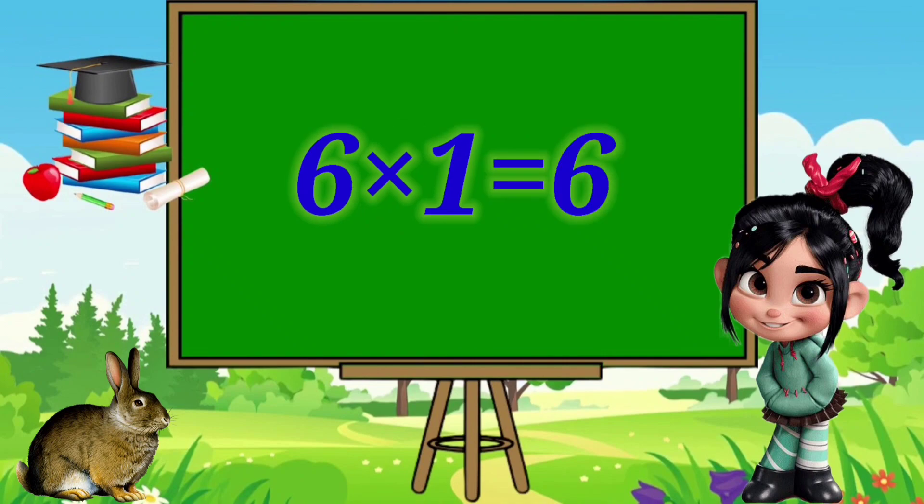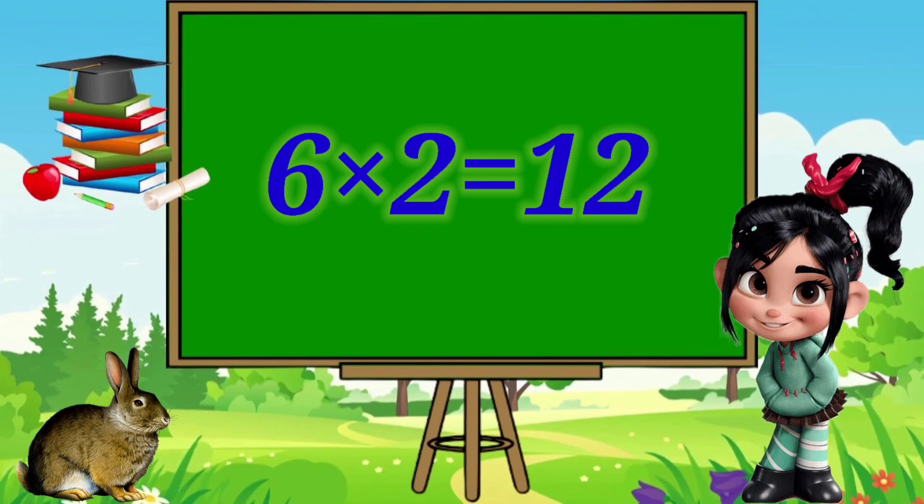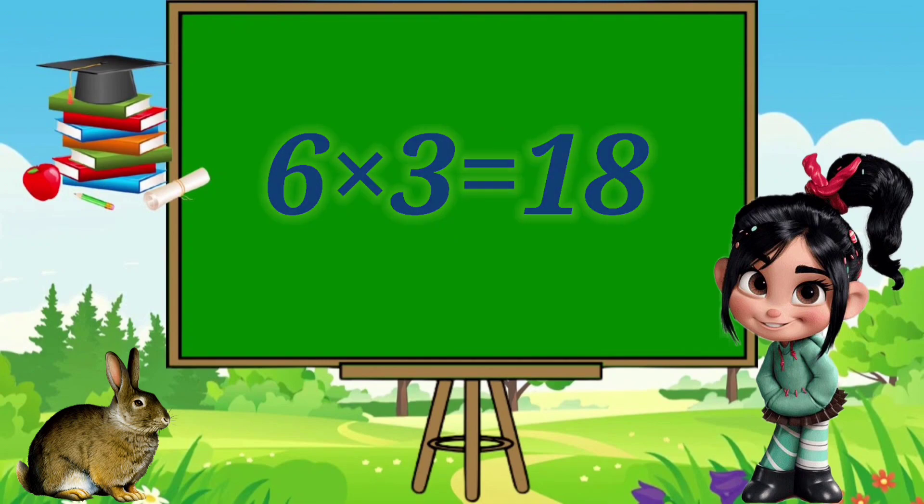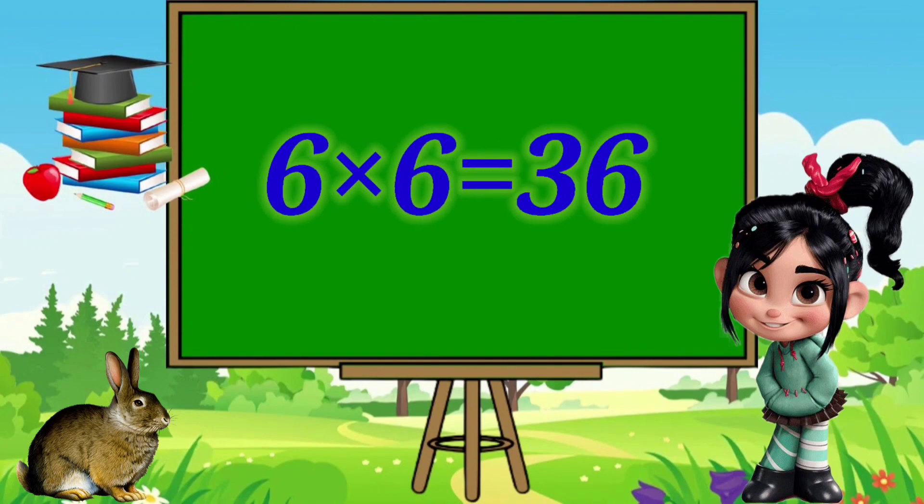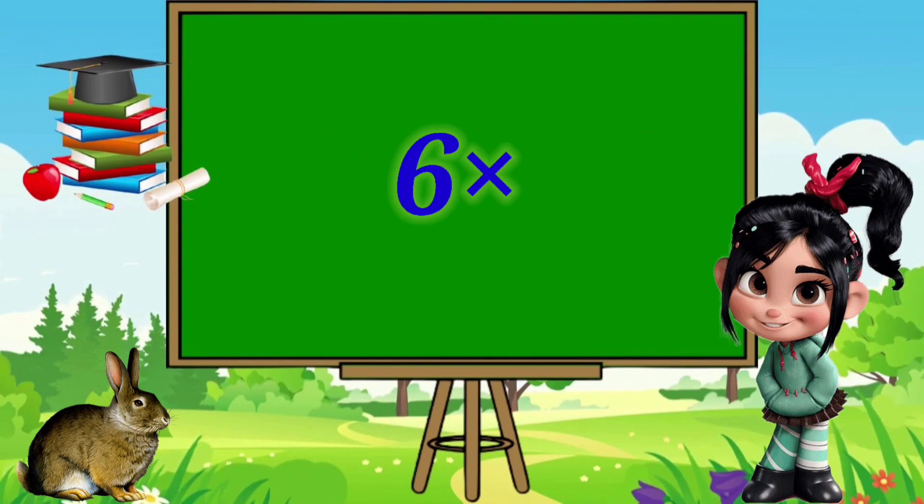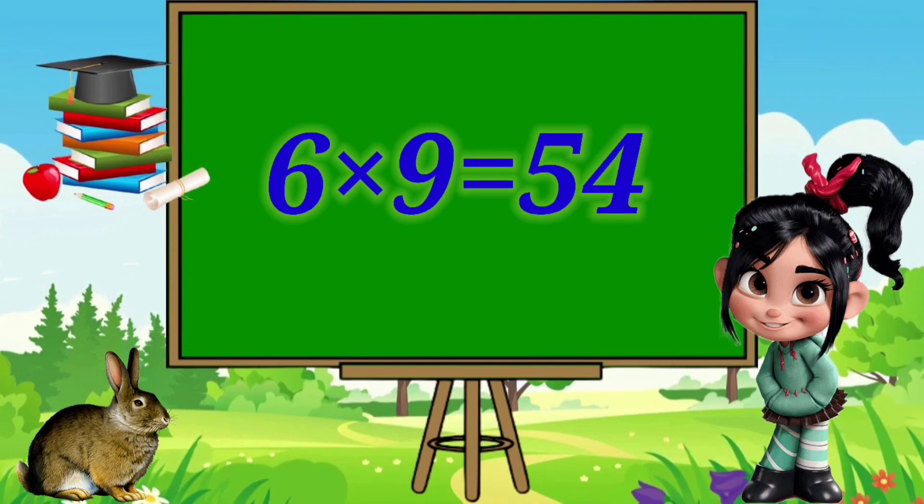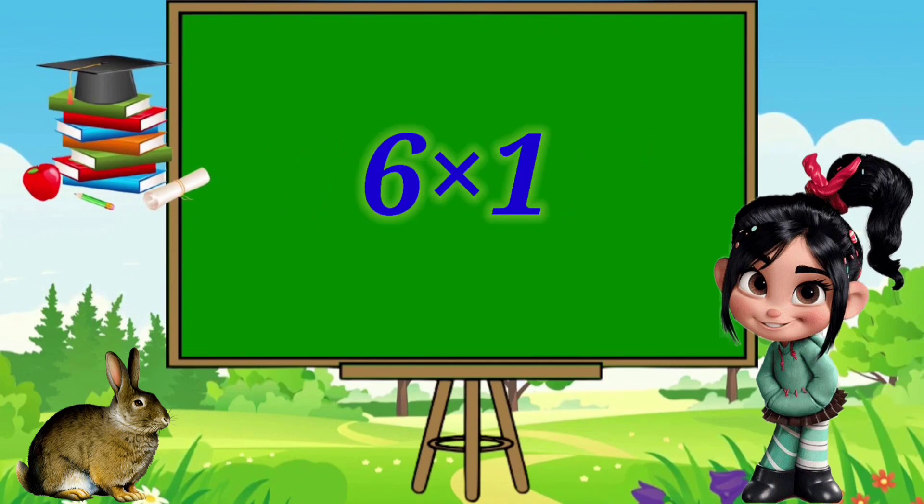6×1=6, 6×2=12, 6×3=18, 6×4=24, 6×5=30, 6×6=36, 6×7=42, 6×8=48, 6×9=54, 6×10=60